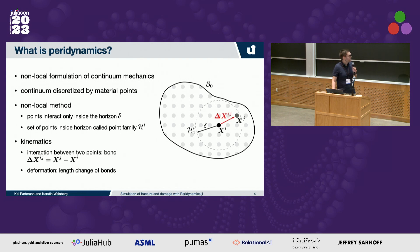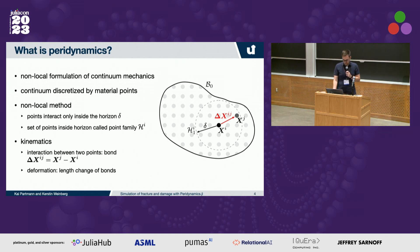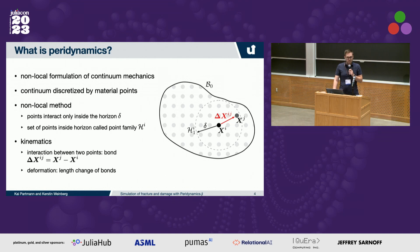The kinematics of this: we have interactions between these points, also called bonds. If you have a deformation on the body, these bonds have a length change, which is then used to calculate forces between the bonds, or between these points.